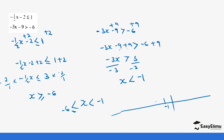So x is greater than or equal to negative 6 and x is less than negative 1. On the number line, our values are between negative 6 and negative 1. Negative 1 is not part of x so its circle is open, while negative 6 is part of x so its circle is filled. Values between negative 6 and negative 1 can be x, apart from negative 1.